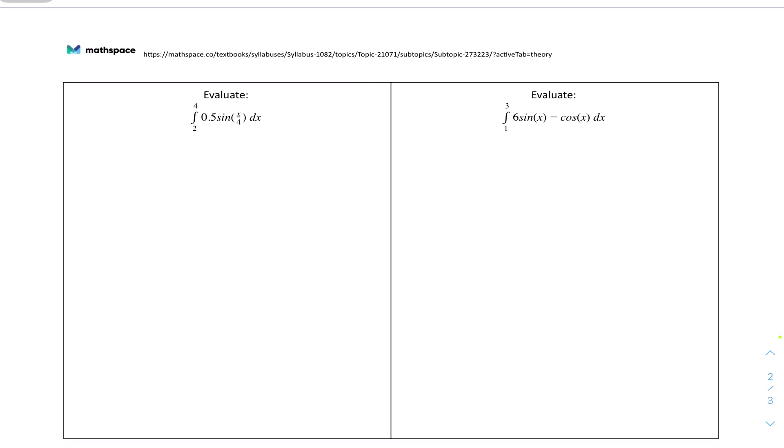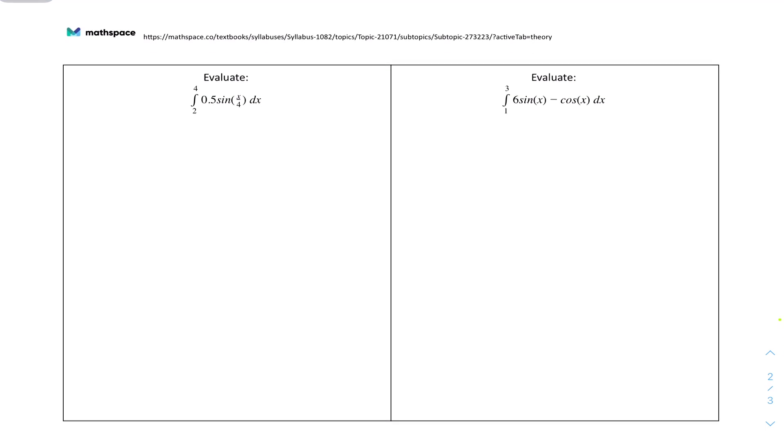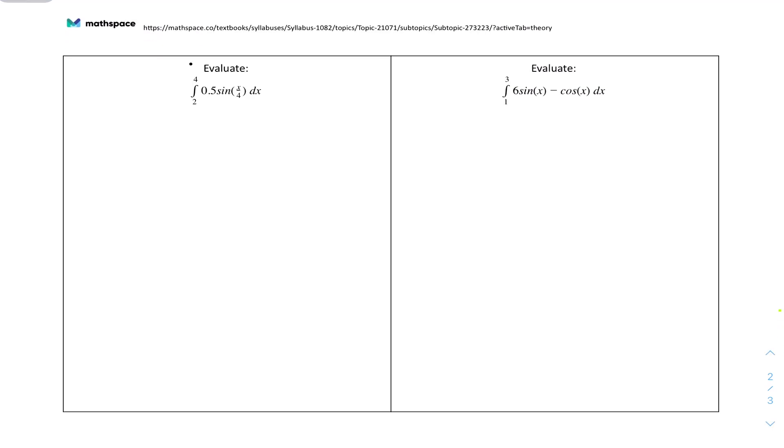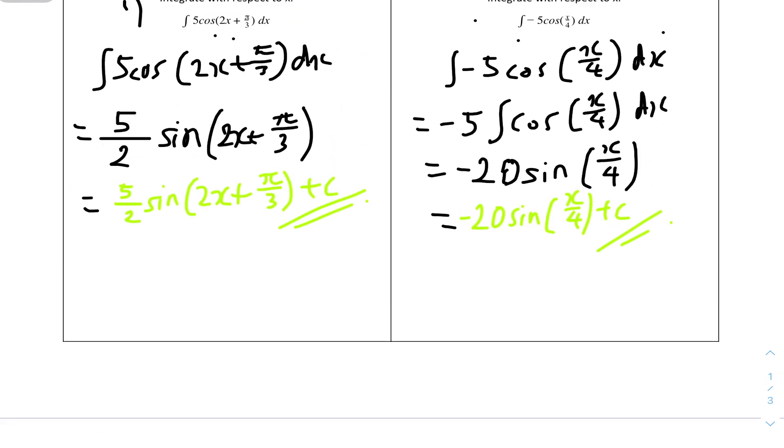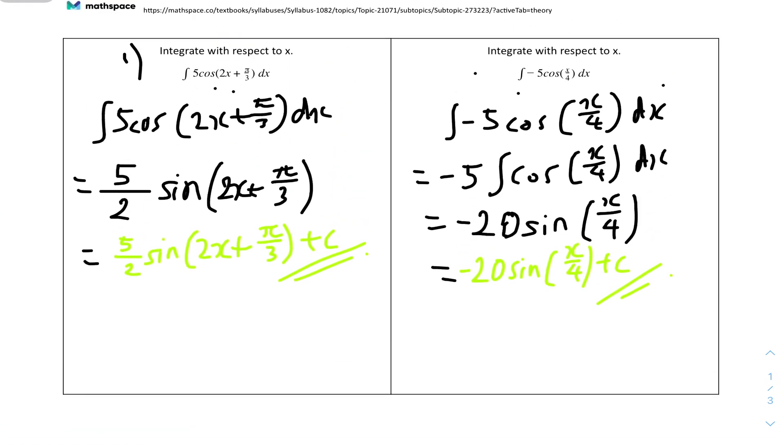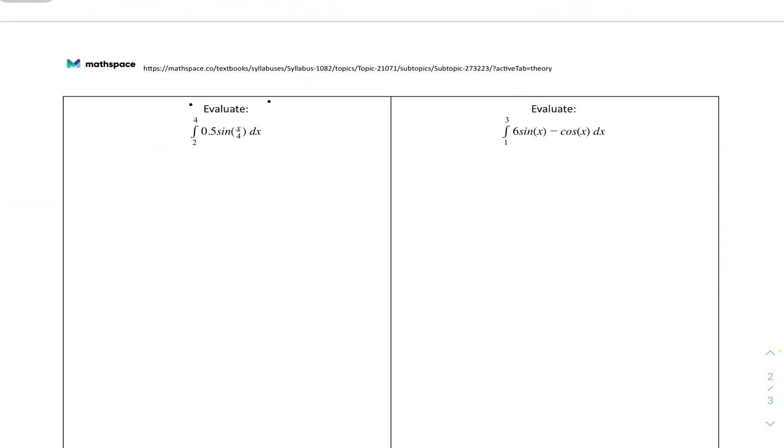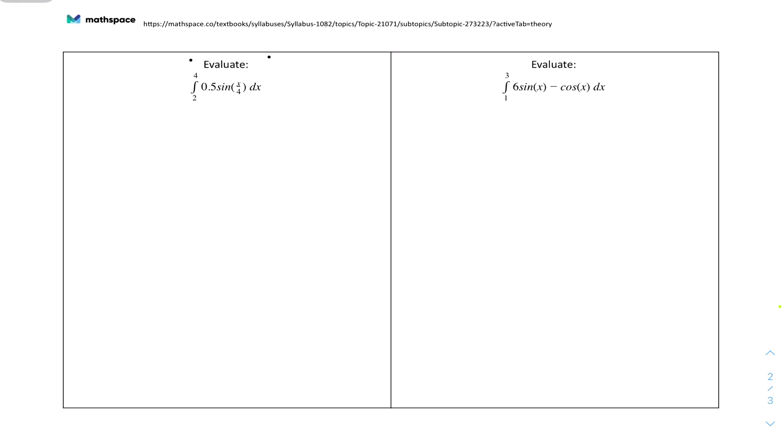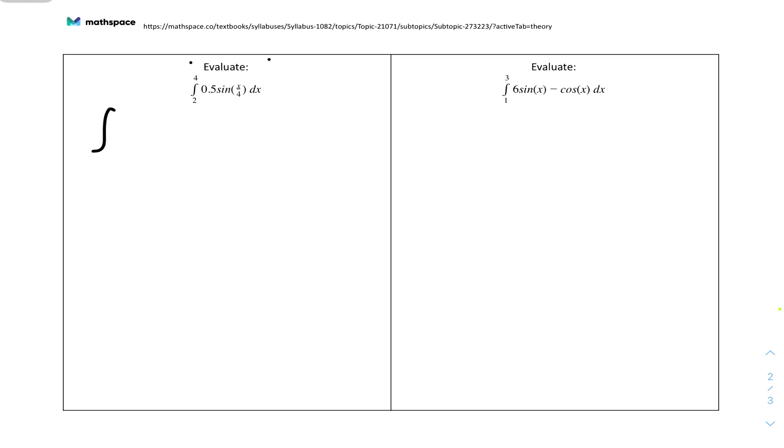We move on to the third question: Evaluate this function right here. Often when you have the word evaluate compared to integrate with respect to x, it means that the answer will be a value, a number, like a numerical value. So we can just first integrate the whole function first. The upper limit is 4 and the lower limit is 2: 0.5 sin(x over 4) dx.